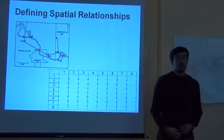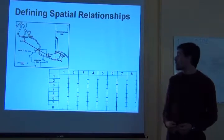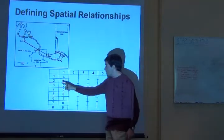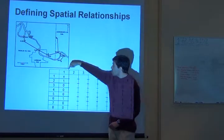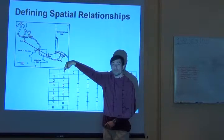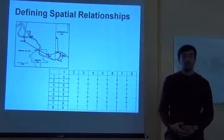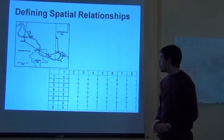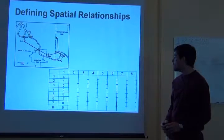So point one is related to point three only indirectly. And therefore, we can build this vector. This vector tells me to what sites point one is related to. And zero is not related at all. And one is yes, indeed related. So point one is only related to point two and six.